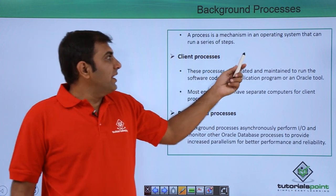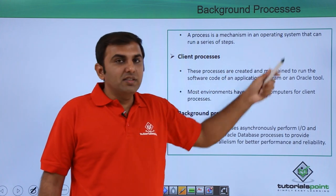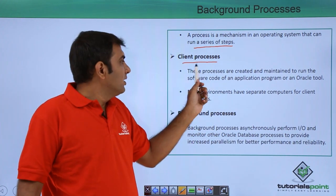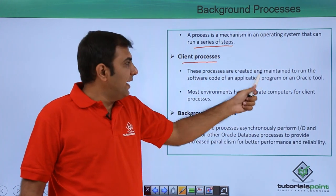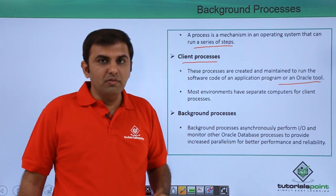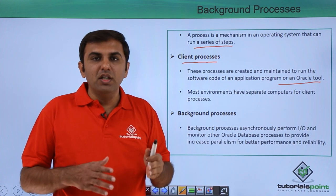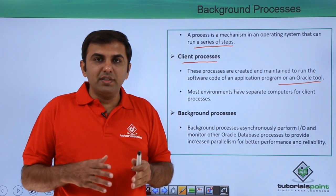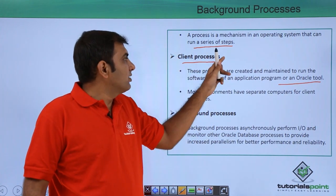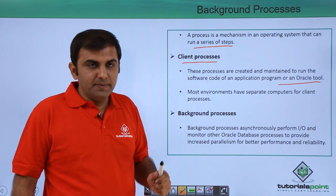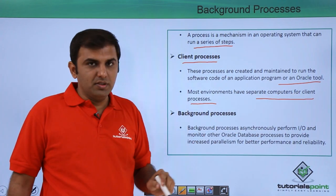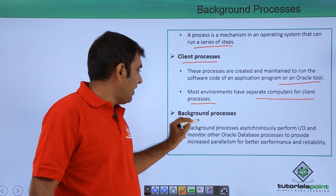A process is a mechanism in the operating system that can run a series of steps. The first is the client process. This process is created and maintained to run the software code of an application program or an Oracle tool. Whenever you are using any application or connecting with SQL*Plus from the client machine, this is the first process that is created — the client process. Most environments have separate computers for the client processes.